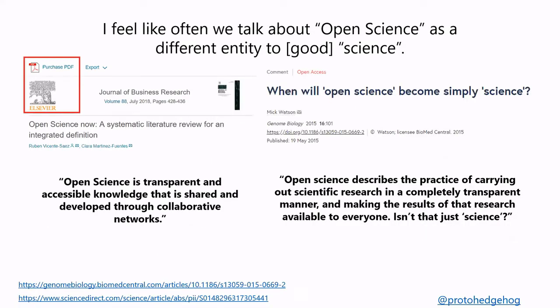Bringing it back to open science — I don't think there's really any unified or widely accepted definition of what open science is. We often talk about open science as if it's distinct from good science. A systematic review on what open science is — sadly paywalled by Elsevier — concluded that open science is transparent and accessible knowledge that is shared and developed through collaborative networks. This is very much based on practices and outputs.